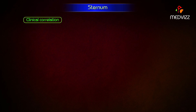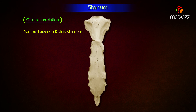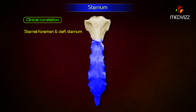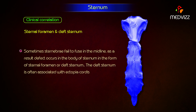Clinical correlation. Sternal foramen and cleft sternum. The two sternal plates fuse in a caudocranial direction. Sometimes sternebrae fail to fuse in the midline, and as a result a defect occurs in the body of the sternum in the form of a sternal foramen or cleft sternum. Cleft sternum is often associated with ectopia cordis.